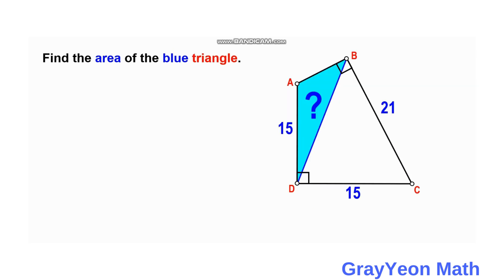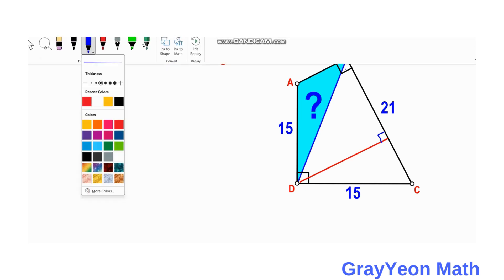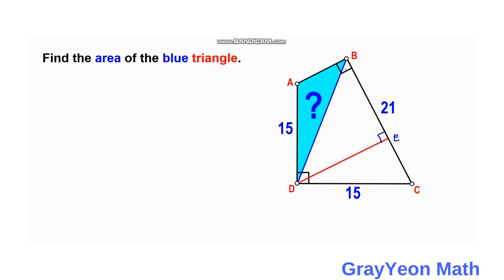So the first thing we can do is draw a line from point D that is parallel to segment AB. To be parallel to AB, this line should be perpendicular to segment BC, because as you can see, at point B, segment AB is perpendicular to BC. Next, we draw another line from point A to this segment — let's call this point E — so from A to segment DE.